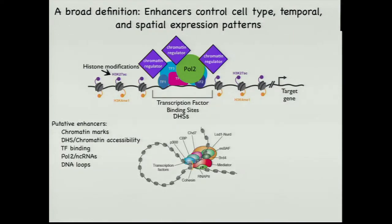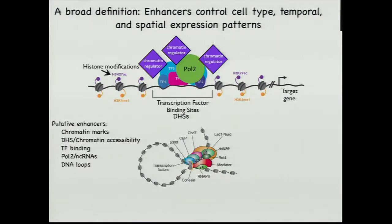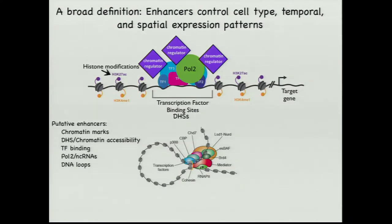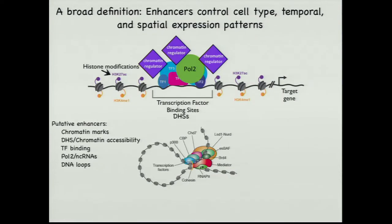We also know that these enhancers likely form loops with their target genes; however, there are different instances where a loop is instructive — for example, the loop is formed when the gene becomes active — versus other cases where the loop is already formed prior to gene activation. These enhancers bind quite a few transcription factors, can recruit chromatin modifiers and chromatin regulators, and all kinds of factors important for inducible gene expression.